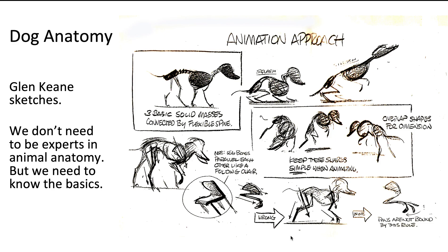There is a big difference between animating a dog versus a horse versus a cat, and a lot of this has to do with the flexibility of the animal's spine. The key difference with animals is between herbivores and carnivores. If you are a carnivore, chances are you have a very flexible spine — think about a cheetah, for example.